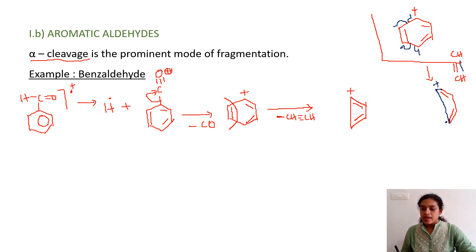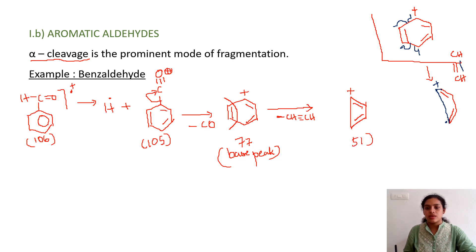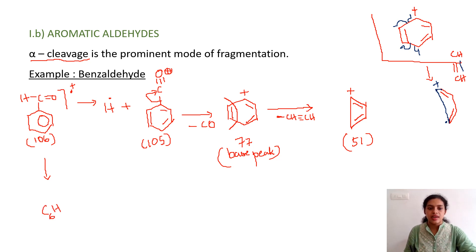The m/z values are: molecular ion peak at m/z = 106; the species after H dot loss at m/z = 105; the phenyl carbocation C₆H₅⁺ at m/z = 77, which is the base peak of benzaldehyde; and the cyclobutadienyl cation at m/z = 51. There is another alpha cleavage possible where instead of H dot, the whole aromatic ring C₆H₅ dot is expelled, giving H-C≡O⁺ at m/z = 29.